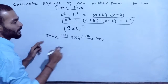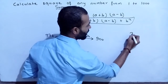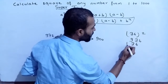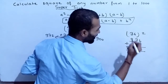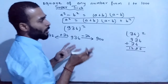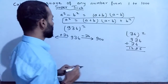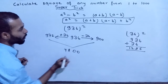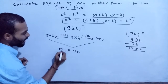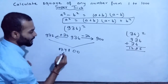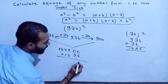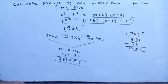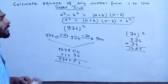Now calculate the square of 36 — for that, watch the previous video Part 1 linked in the description. The square of 36 is 1296. Multiply 972 by 900, which equals 874,800. Then add 1296 to get 874,800 + 1296 = 876,096. So the square of 936 is 876,096. You can calculate this in just a few seconds.